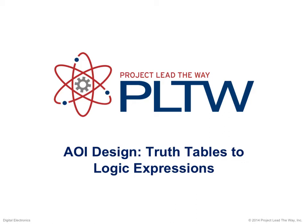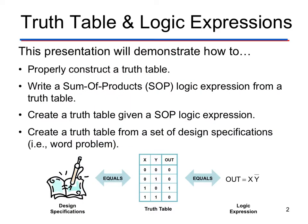We're going to learn about AND/OR/inverter design using truth tables, or converting truth tables to logic expressions. Here's an overview of what we're going to do: you're going to learn how to construct a truth table, how to write SOP (sum of products) statements from a truth table, and how to create a truth table given a SOP logic expression — so we're reversing what we were talking about.